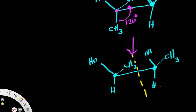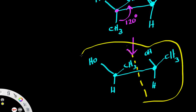I hope that was helpful. You can simply take a Fischer projection, convert it into a Sawhorse, rotate one of your carbons — it doesn't matter which one — and after you rotate the carbons, you can see if they match up and identify the internal mirror plane of symmetry.